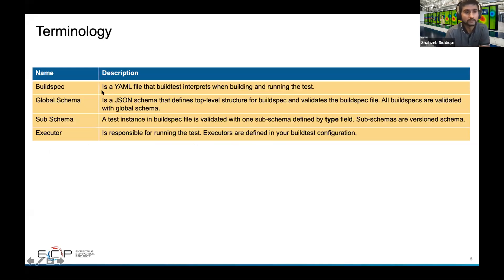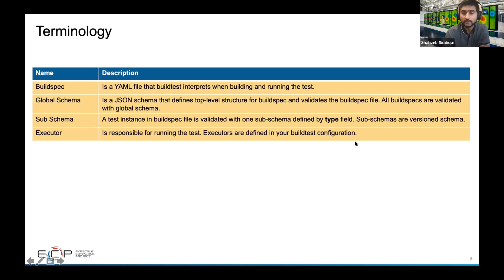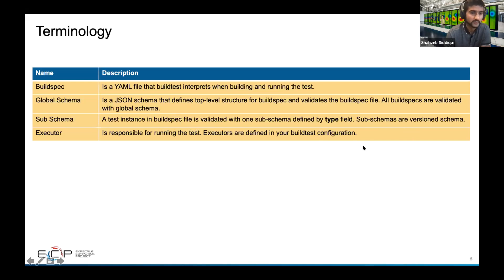Some terminology in BuildTest: a build spec is the YAML file that BuildTest interprets when building and running a test. There is a global schema that validates the top-level structure of the build spec, and we also have a subschema that validates each test instance. In a build spec, you can have multiple test declarations, each validated with one subschema defined by a type field. These subschemas are versioned. Executors are responsible for running the tests and are defined in your configuration file — think of them as a local executor, or a Slurm, PBS executor — each mapping to a queue in your system.